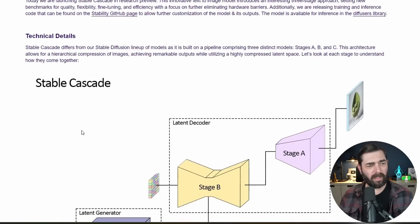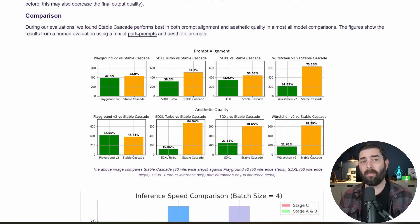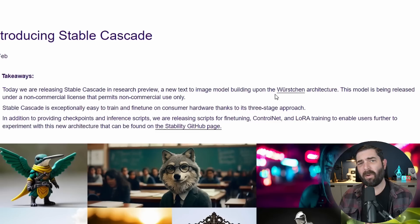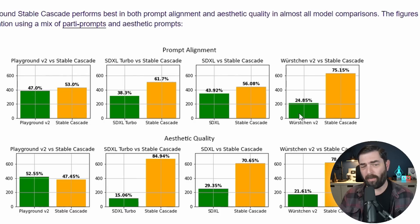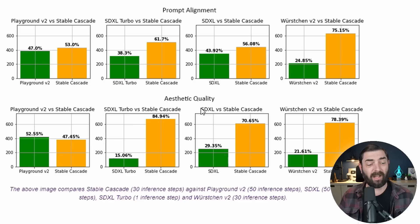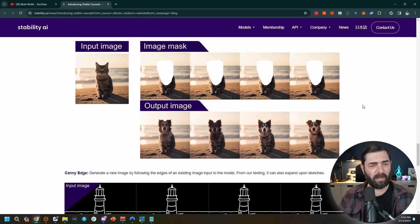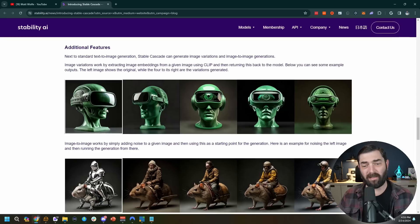The Stability website has a blog post with all the technical details. What we really care about are these graphs: prompt alignment — how well it adheres to your prompt — beats out Playground v2, SDXL Turbo, SDXL, and Würstchen v2, which is the architecture this model was built on top of. As for aesthetic quality, it ranked slightly lower than Playground v2 but much better than the others. As for speed, it's way faster than SDXL and Playground v2, though not quite as fast as SDXL Turbo. It also supports ControlNets, inpainting, and image variations.